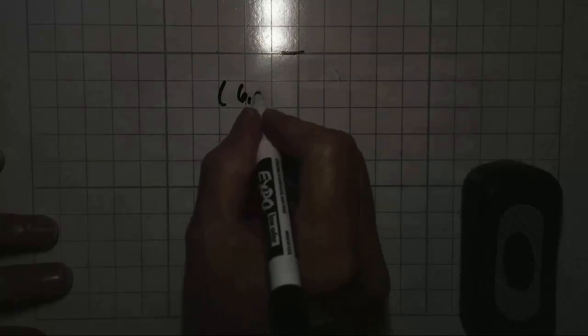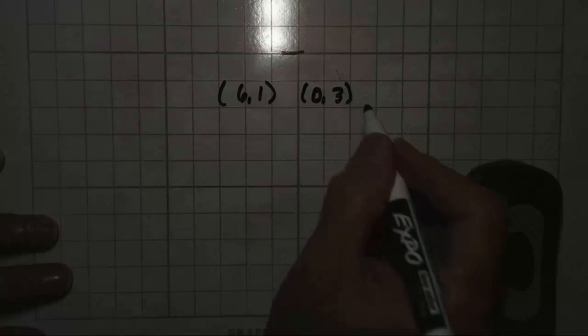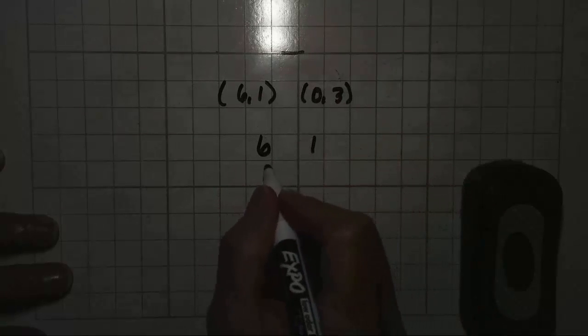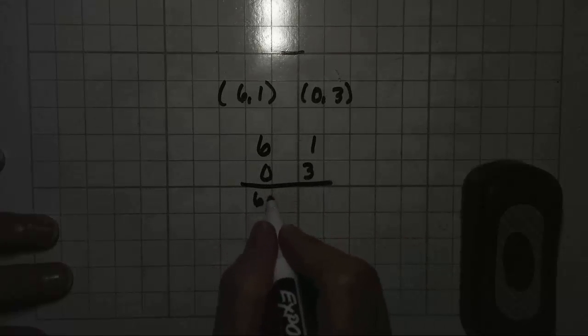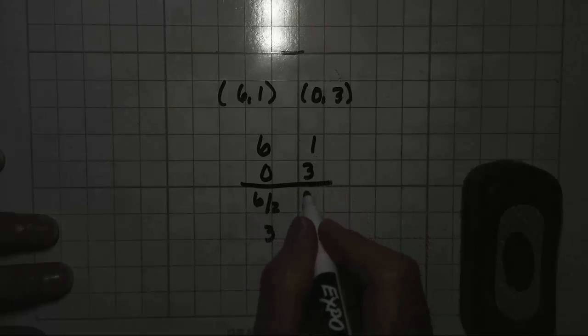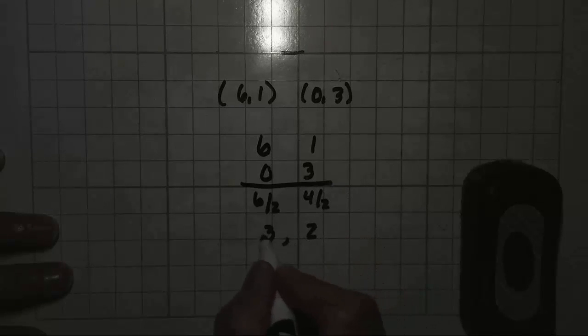One endpoint is at 6, 1 and the other endpoint is at 0, 3. Where's the midpoint? Again, stack them up. 6, 1 and 0, 3. Draw your line. 6 plus 0 is 6. 6 divided by 2 is 3. 1 plus 3 is 4. 4 divided by 2 is 2. So your midpoint is at 3, 2.